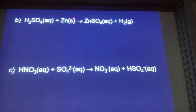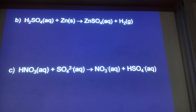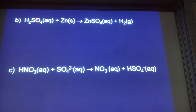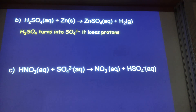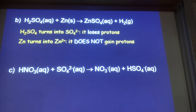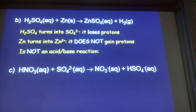What about sulfuric acid reacting with zinc metal to produce zinc sulfate and hydrogen gas? Do we have a substance losing a single proton and a substance gaining a single proton? No — zinc doesn't gain or lose a proton, it turns into an ion. Sulfuric acid sort of loses two protons to turn into sulfate, but we don't have two substances each differing by a single proton. It is not a conjugate acid-base pair, therefore not an acid-base reaction.